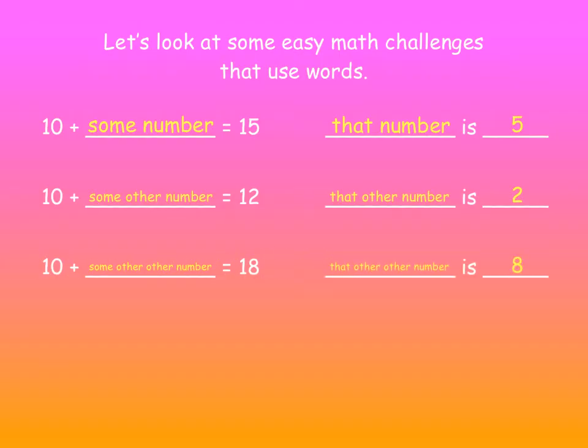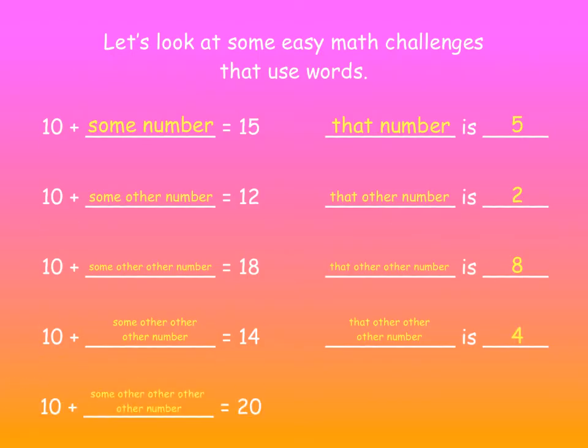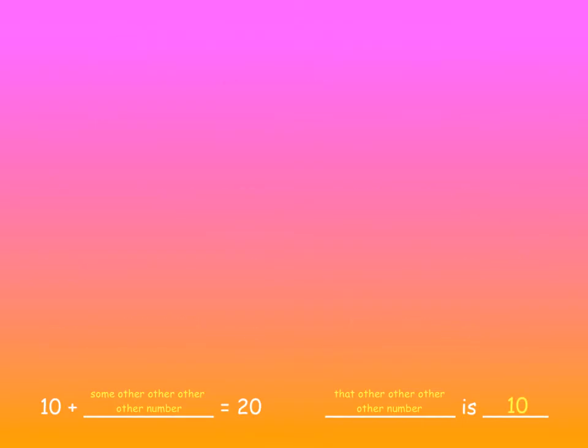Okay. 10 plus some other other other number is 14. So that other other other number is 4. And 10 plus some other other other other number is 20. So that other other other other number must be 10. Okay. You know what? All these other other others are driving me crazy. This is too many words.